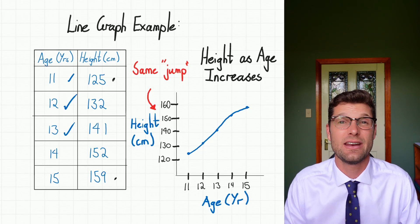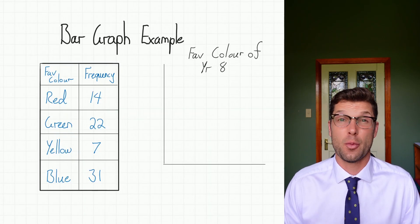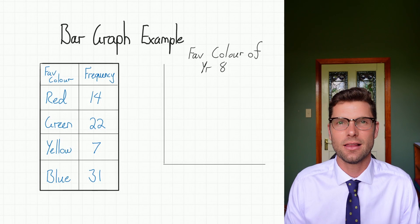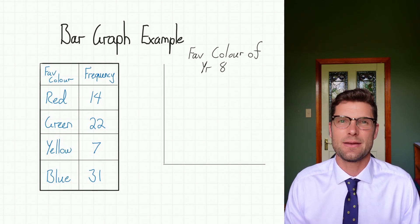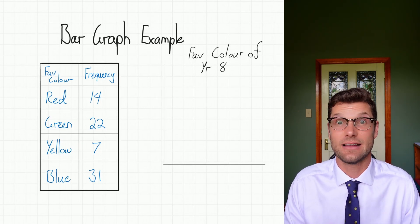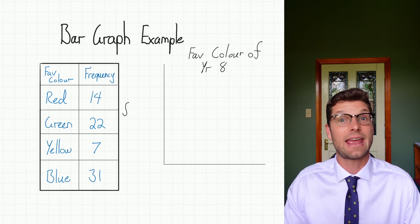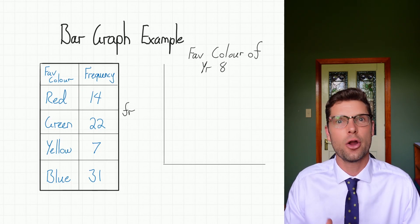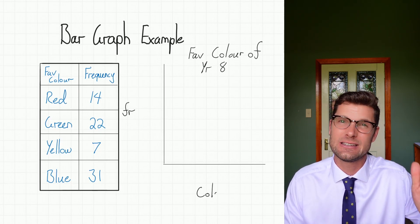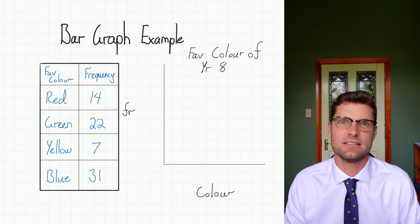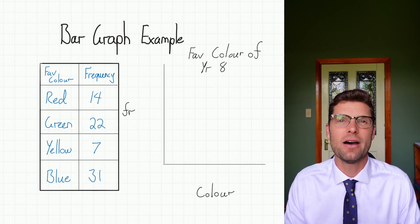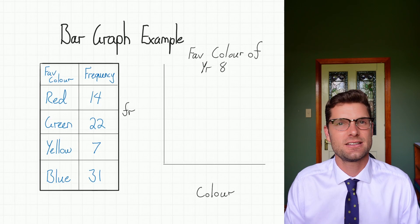Now we're just going to do a bar graph example. I've surveyed people about their favorite color, and we've just got to do the exact same steps. The first thing is to make sure the axes are labeled correctly — we're going to have the categories down the bottom, that's the color. And then frequency always goes up on the y-axis — that's something really easy to remember. Frequency on the y-axis, 100% of the time.